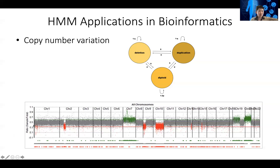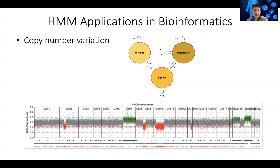From high-throughput sequencing, you calculate the read coverage across the chromosome of an individual, and you should expect this to be even — this would be the diploid genome. But in some regions, you might see that suddenly the coverage becomes much lower, and in other regions much higher. Occasionally you might see a little noise — this could be sequencing or microarray probe issues. But if you have consecutive regions with lower or higher coverage, you might be able to call this as a duplication or deletion in the genome, which has copy number changes.